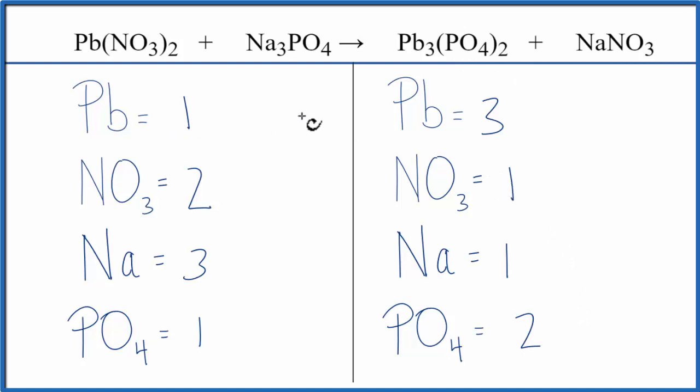Why don't we fix the lead first and see what happens. We need three on this side to balance these three, so we'll put a coefficient of three. One times three, that'll give us three leads. And then we have two times one, so we have two nitrate groups. So two times three, that'll give us six nitrates.